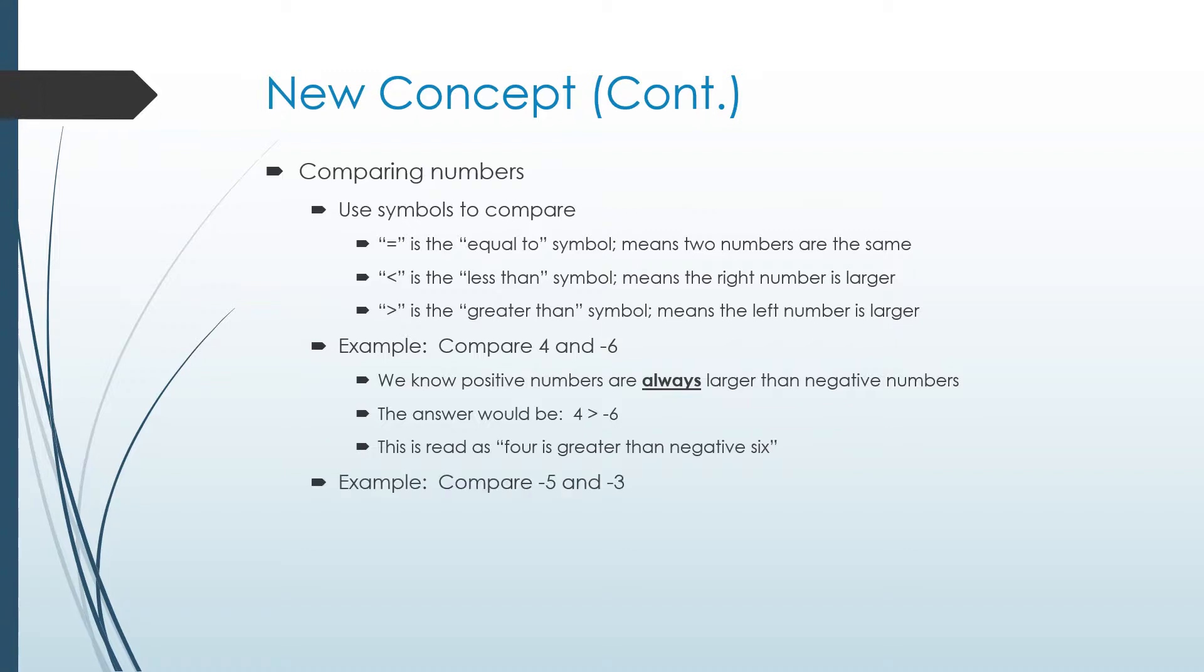If we were comparing negative five and negative three, with negative numbers, the closer a negative number is to zero, the larger the number is. So negative three is closer to zero than negative five, which means it is larger. So we would read that as negative five is less than negative three.